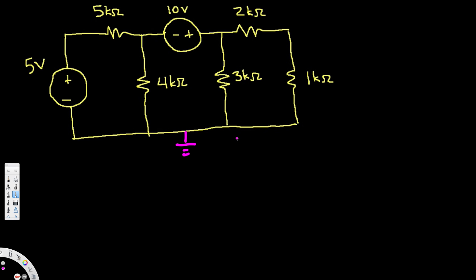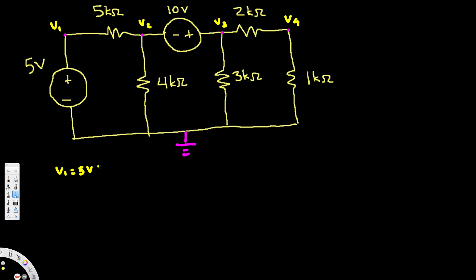For each node we assign variables like V1, V2, V3. So we have one node here, one node here, one node, and another node — let's call them V1, V2, V3, and V4. V1 is very easy because this 5-volt source is connected to it, so V1 is equal to 5 volts.